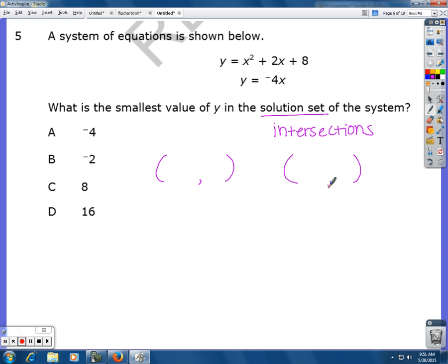and then I'm going to look at my two intersections. I know that the first one is x and y, and then x and y. Now it wants to know the smallest value of y, so I'm going to be looking for what my y is, and whichever y value is smaller, that's the number I'm looking for.